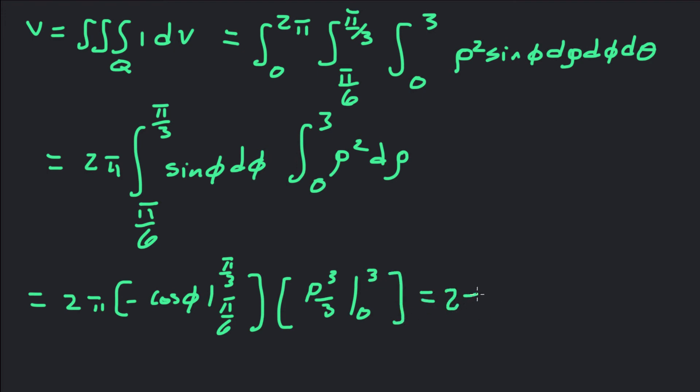This is 2π times: -cos(π/3) would be -1/2, minus minus gives us +√3/2. And then ρ³ will be 27/3 minus 0, so 27/3 is 9.